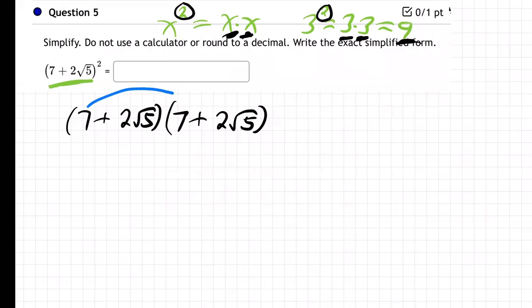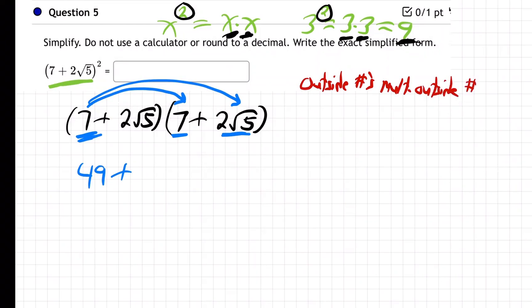Now, how's it going to happen? Well, the first one, you know how to do two parentheses. The first one is going to go to both. So 7 times 7, that's easy, 49 plus. Now, what happens when 7 multiplies 2 root 5? Well, let's write down the rule for multiplying roots. Outside numbers multiply outside numbers. And inside numbers multiply inside numbers.